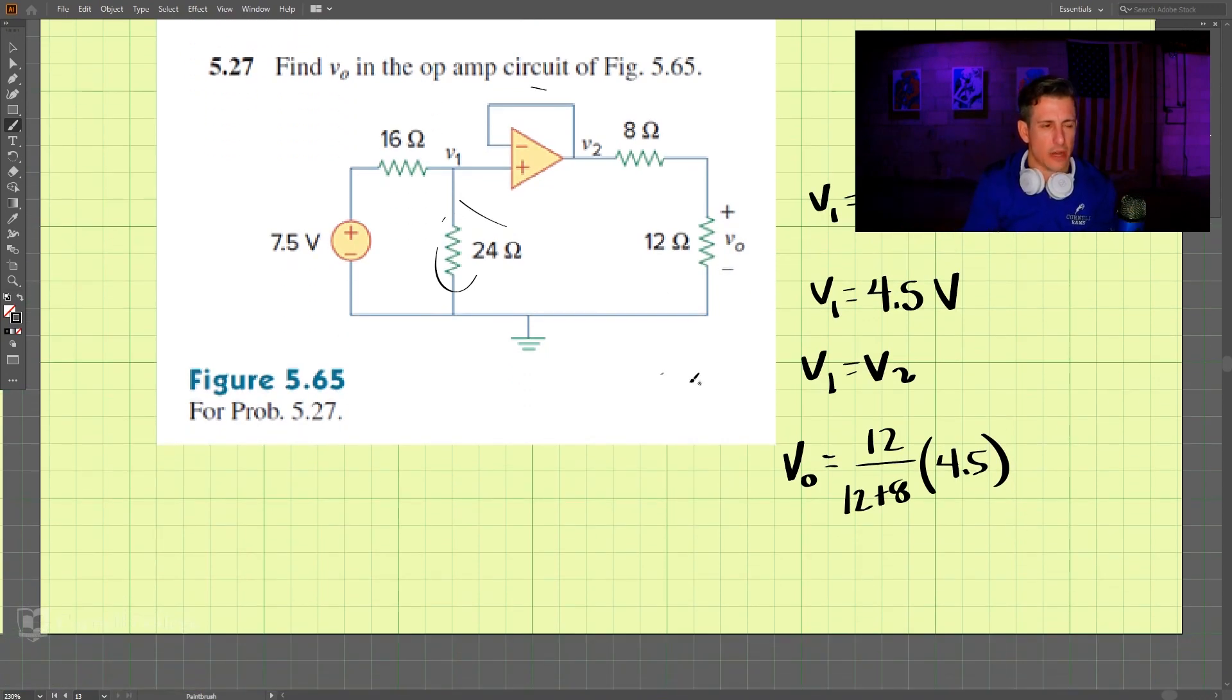So that comes out to be 6 over 10, 3 over 5, I think that's 3 divided by 5 times 4.5. And that is 3 divided by 5 times 4.5, 2.7 volts. That is 2.7 volts.